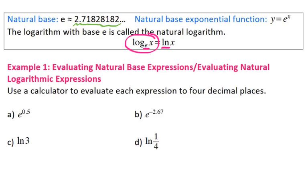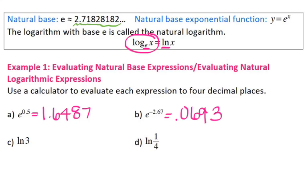So for the first example, you're just evaluating using the calculator, so you can round to four decimal places. So you're taking that and plugging it in. e to the 0.5 gives us 1.6487. For letter b, e to the negative 2.67 gives me 0.0693 to four decimal places.